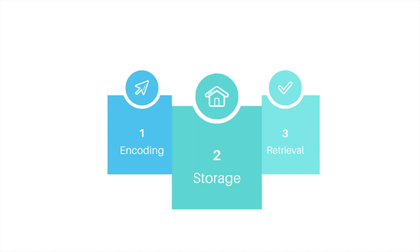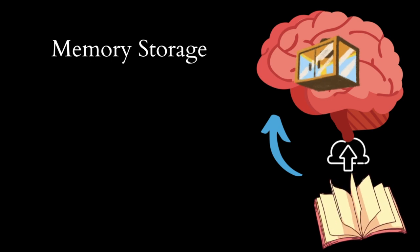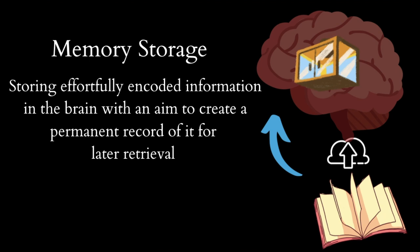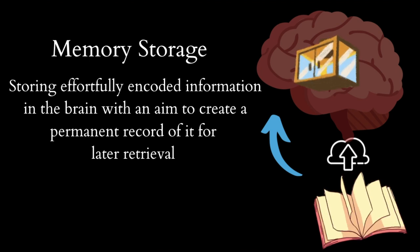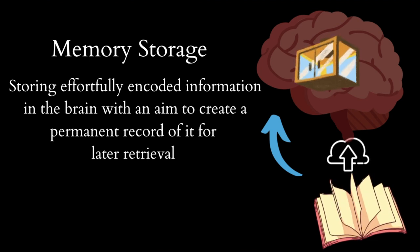Let's start by asking: what is memory storage? Memory storage can be visualized as a storage space — such as a box overlaid on the schematic of a brain — which stores information that has been encoded. More formally, memory storage is the act and process of storing effortfully encoded information in the brain with an aim to create a more permanent record of it for retrieving or recalling it at a later stage.